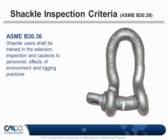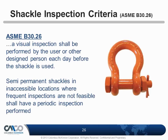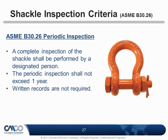Inspection criteria — now we want to be sure the shackle is safe to use. A visual inspection shall be performed before each use where feasible. Where it's not feasible to inspect every lift, you must at least do a periodic inspection — not to exceed once a year, but more frequently depending on severity of service, such as three or four times a year. The periodic inspection is a complete inspection performed by a designated person; written records are not required.